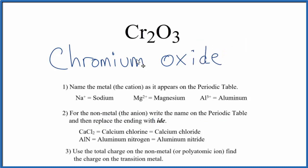So at this point, we have chromium oxide, except that chromium is a transition metal, and it can have different charges depending on what it's bonded to. Here, these two chromium atoms are bonded to three oxygen atoms.